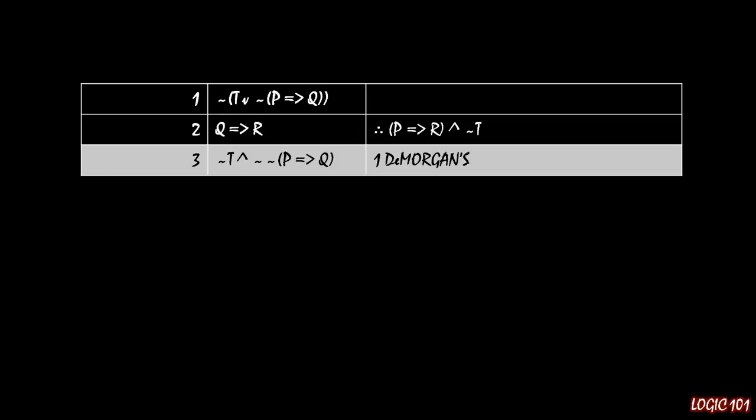So we distribute the negation first to the T, so we have NOT T, and then instead of having an OR, the negation is the flipping of that, so we go to a conjunction there, and then if we distribute the negation one more time, we have NOT NOT P implies Q. So that was our first step, it was to DeMorgan's what we could.